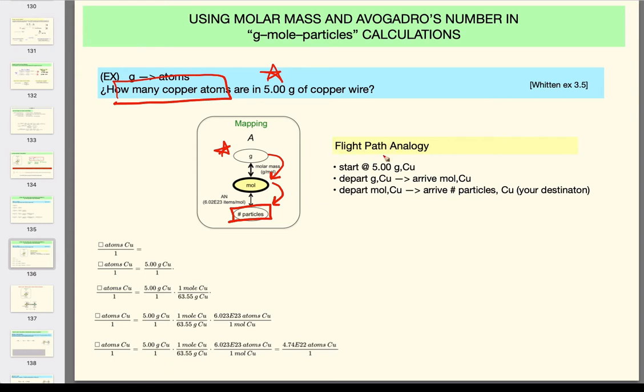We talked about mapping going from one to the other. The analogy I want to draw here is with a flight path. What we do is pretend it's like an airplane flight and you have different stopovers. We started at grams of copper, then we departed grams of copper and arrived moles of copper. That's our first leg. Then we departed moles of copper and arrived number of particles, in this case the particles being the atoms.